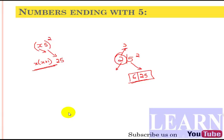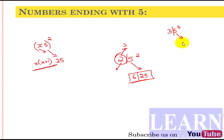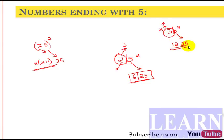Let's take more examples. For 35 squared, divide into two parts: for the 5 we write 25. The number is 3, so multiply with the next number, which is 4. 3 times 4 is 12. So the answer is 1225.